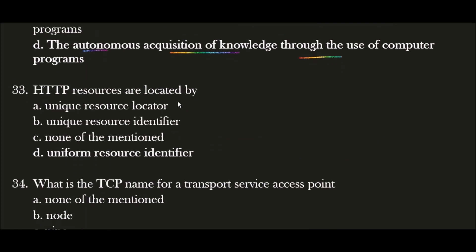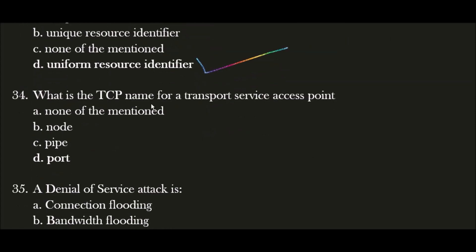Next question: CoAP resources are located by? The correct answer is option D — Uniform Resource Identifier (URI). CoAP resources are located by Uniform Resource Identifier. Next question: What is the TCP name for a transport service access point? The correct answer is option D — Port. Port is the TCP name for a transport service access point.